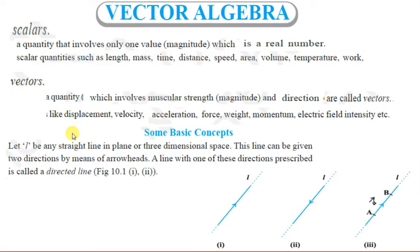In daily life we come across many quantities which require only magnitude to specify them. For example, length, mass, time, distance, speed, area, volume, temperature, and work. These quantities require only the value. There is no concept of direction. Such quantities which require only one value, that is magnitude which is a real number, are called scalar quantities.